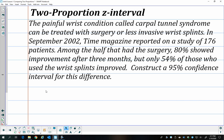So we are going to create what we call two-proportion z-intervals. I want you to take a second and read this scenario about carpal tunnel, and then we're going to create a 95% confidence interval for the difference in these two healing processes.